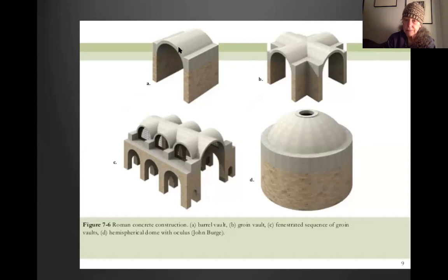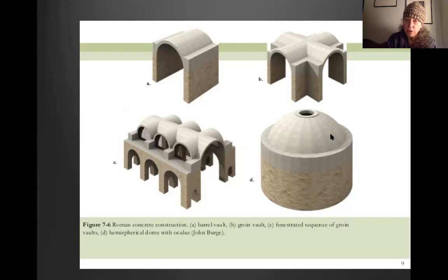If you stick a bunch of arches together, you get a barrel vault. If two barrel vaults intersect at a right angle, it's a groin vault. A sequence of groin vaults is fenestrated — the tops of the arches become windows that let light in. And if you arrange arches in a circle, you have a dome with an oculus. All these structures were used by the Romans in cities around Europe and the Mediterranean.